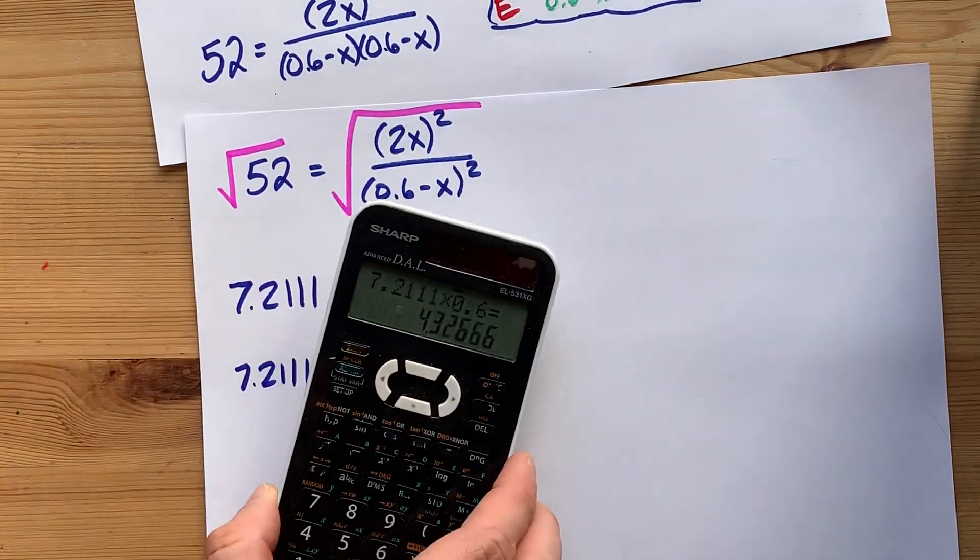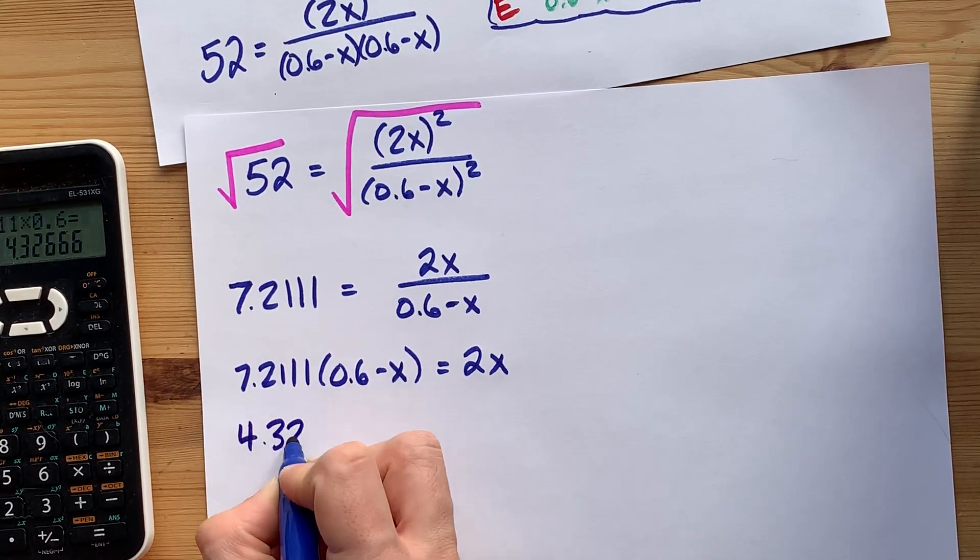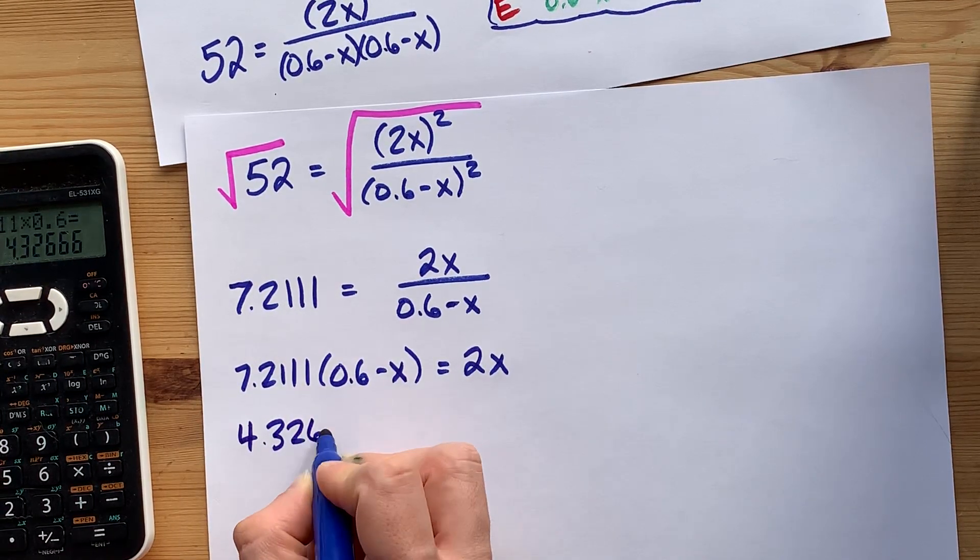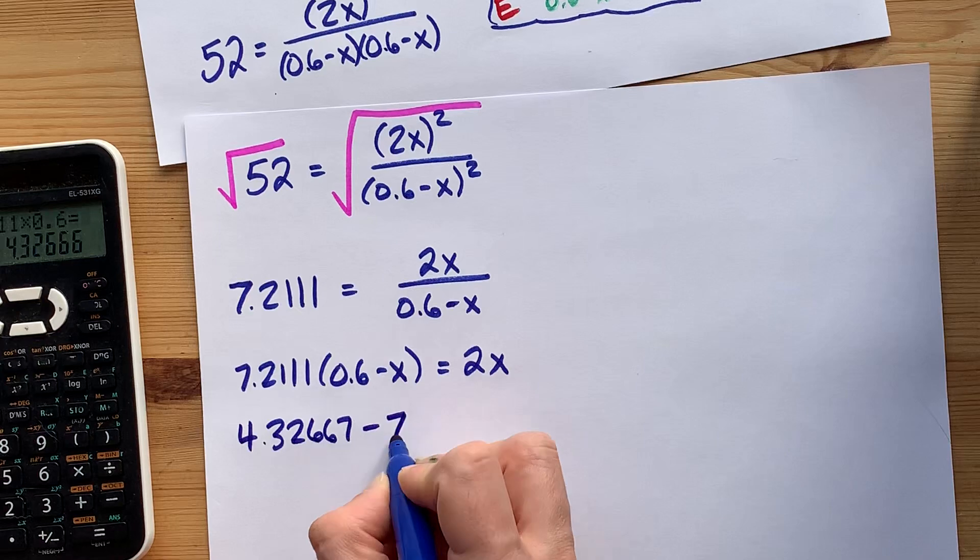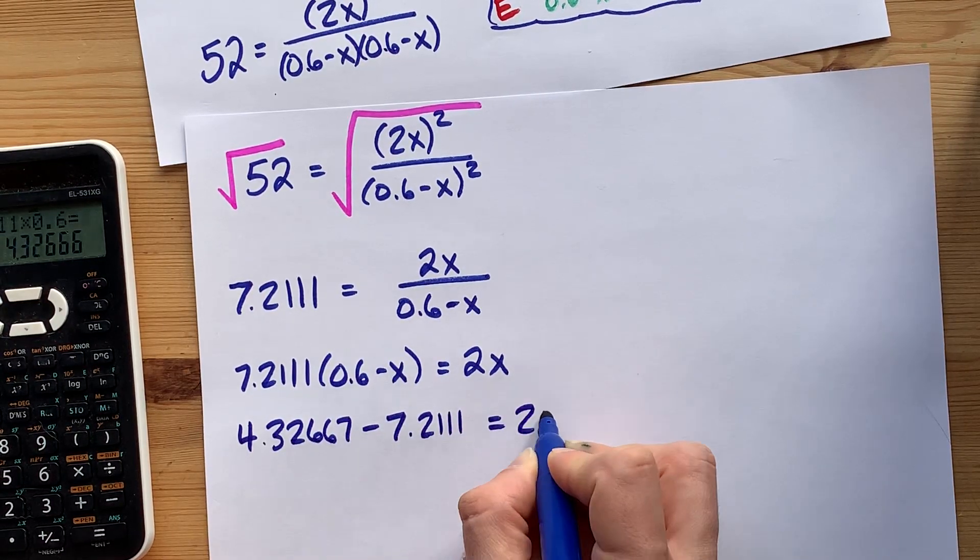Now you have to multiply the 7.2111 times the 0.6. 7.2111 times 0.6. Oh, I'm doing this on my calculator. Can you see that? This is 4.32667 minus 7.2111. That equals 2X.